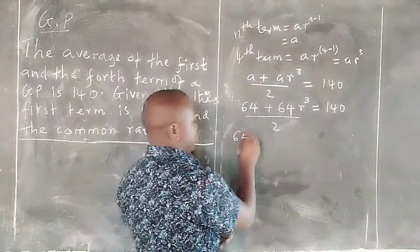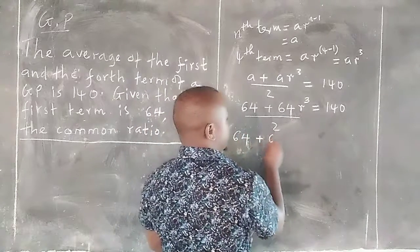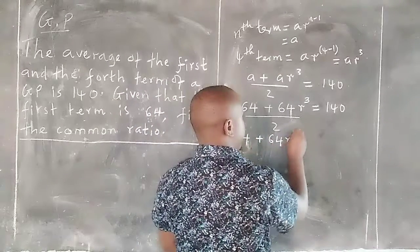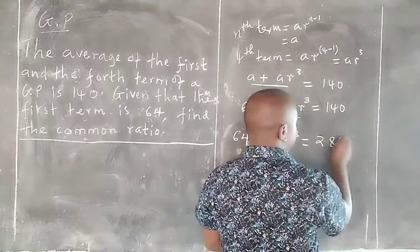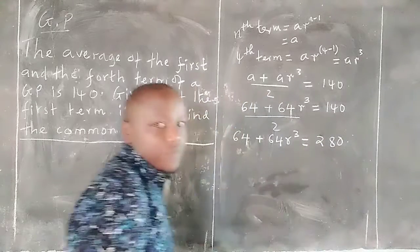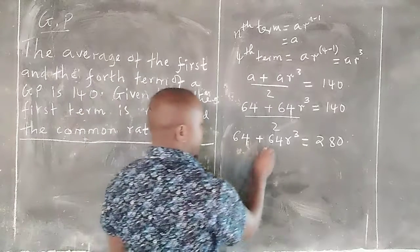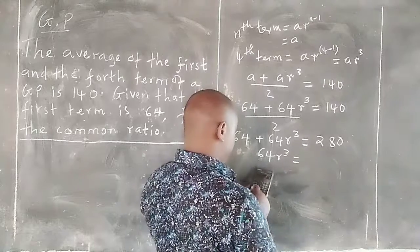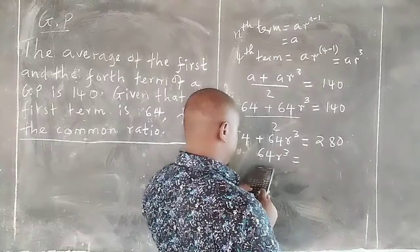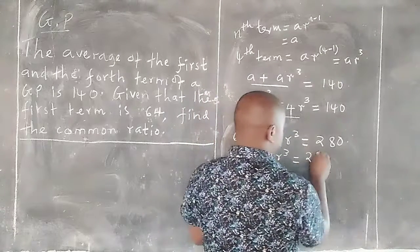Therefore here we can have 64 plus 64 r cubed equals to 140 by 2, which gives us 280. Therefore 64 plus 64 r cubed will give us 280. Subtracting 64 gives us 216.